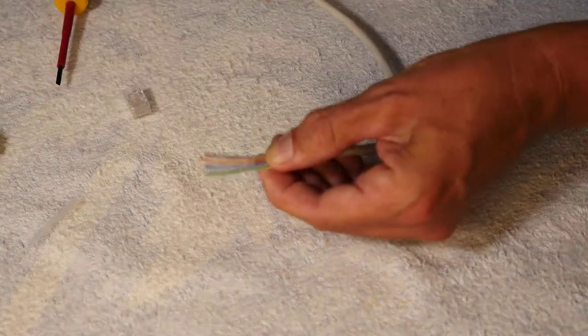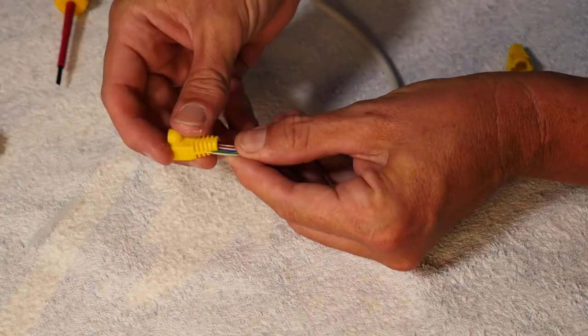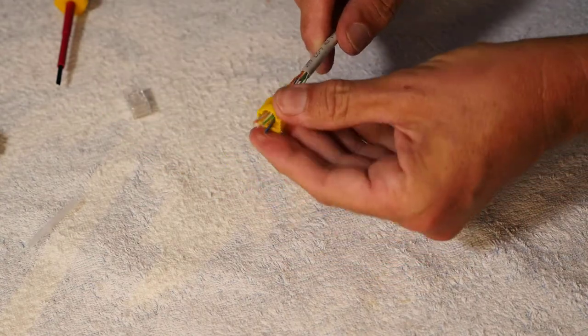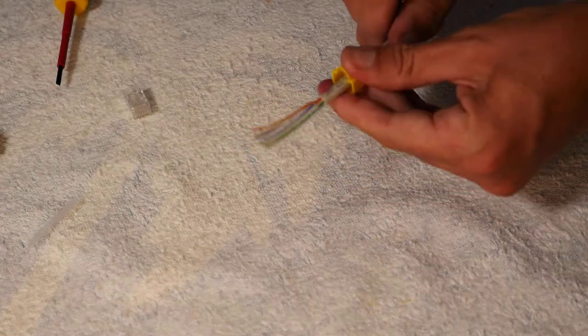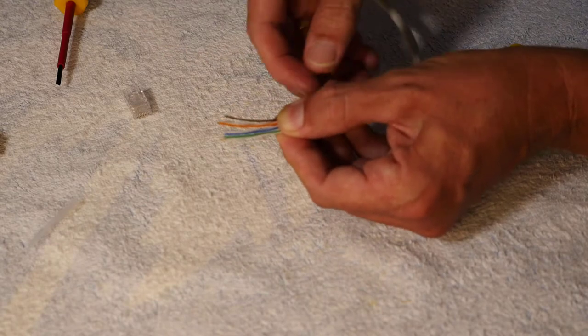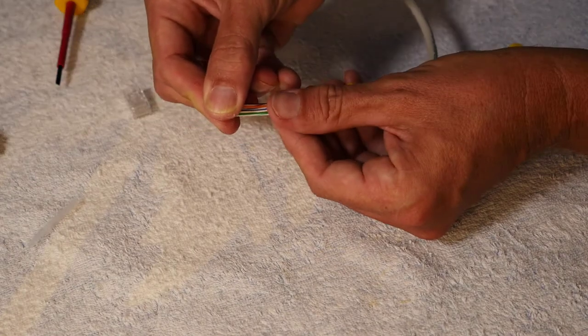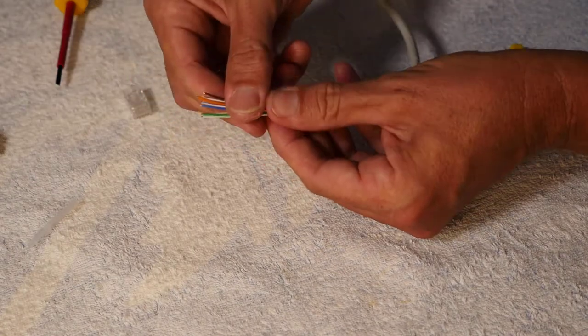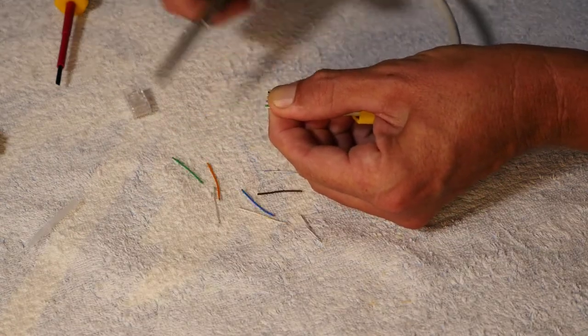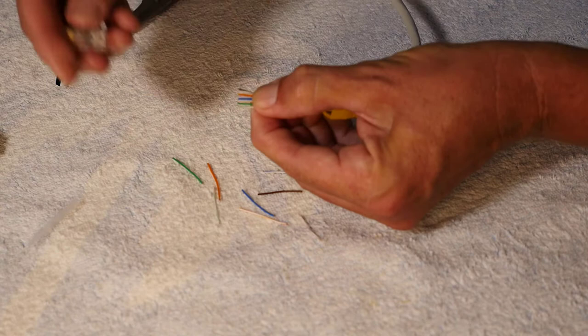Before we do anything else, I could have done this at the start and maybe should have - going to put this boot on. Slip the boot over the whole lot because that's going to slide over the RJ45 connector when we're done. I'll just make sure we're still in order, which we are. One thumb length up from the cut, trim the cable nice and quick. It's all caught with the towel which all goes in the bin.